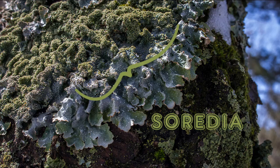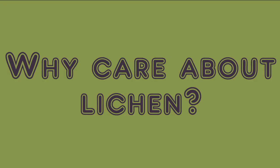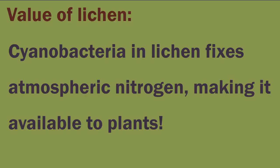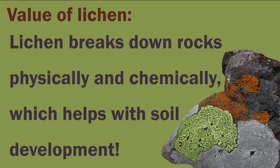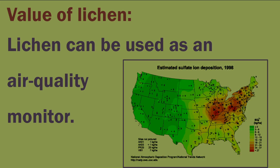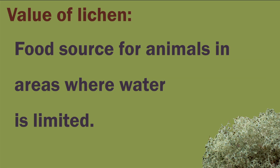When identifying a lichen, there are a few features to look for, like soredia and isidia. So why should we care about lichen, other than the fact that they're a really cool symbiotic relationship that has been evolving for millions of years? First, cyanobacteria in lichen can fix atmospheric nitrogen, making it available for use by plants. Lichen also breaks down rocks physically and via chemical weathering, which helps with soil development. Lichen can be used as air quality biomonitors because they are sensitive to sulfur dioxide and nitrogen. It also feeds animals like reindeer, and can be an important food source in areas where water is limited.